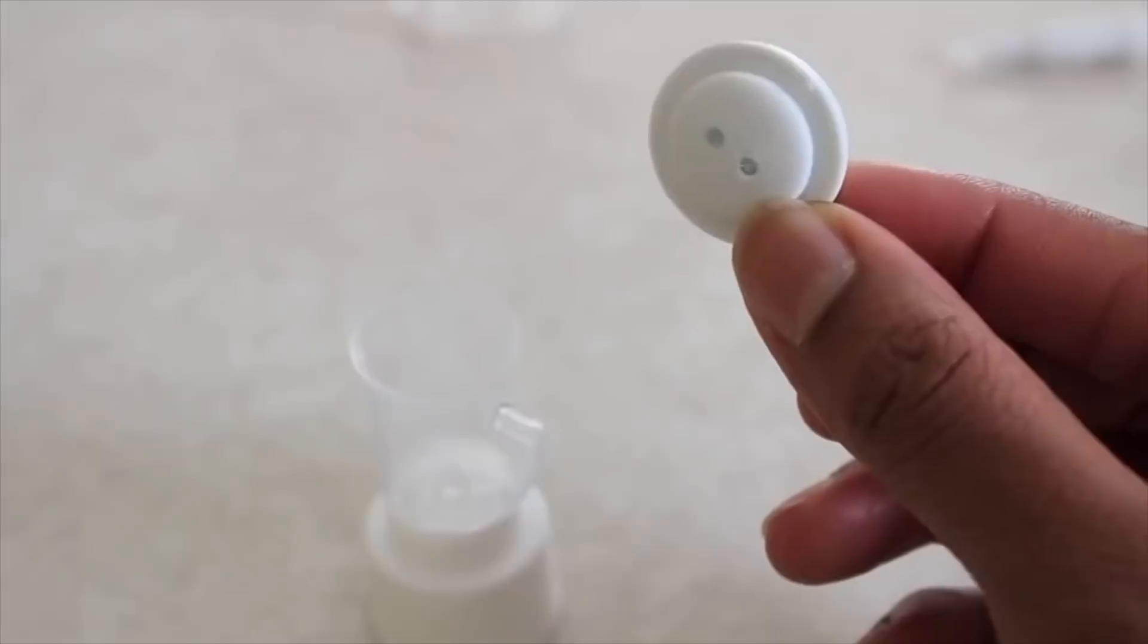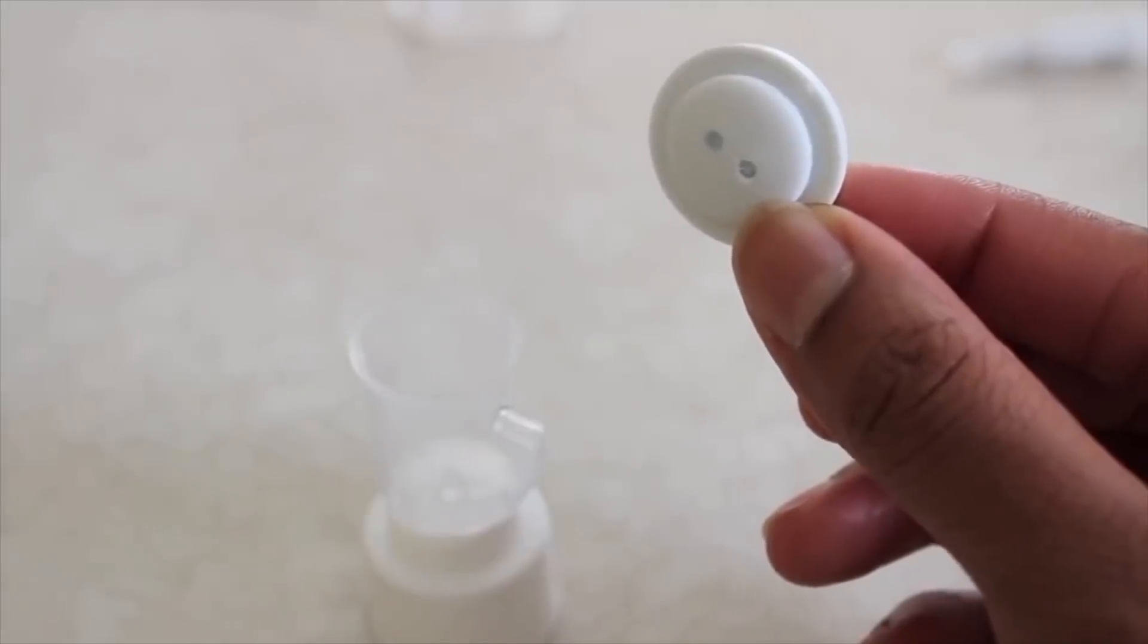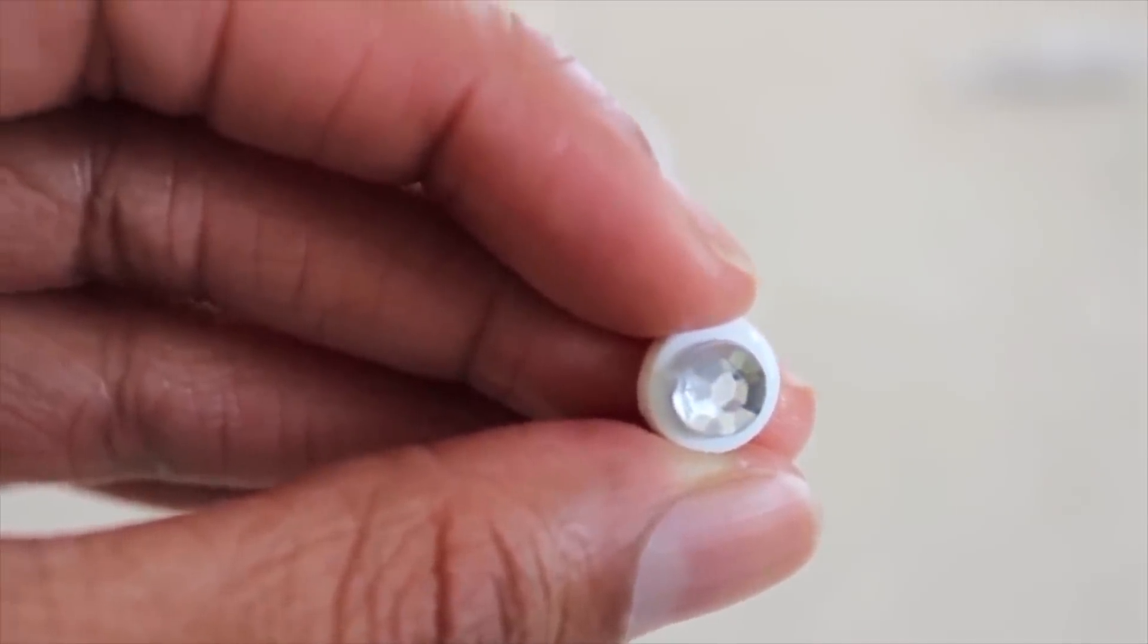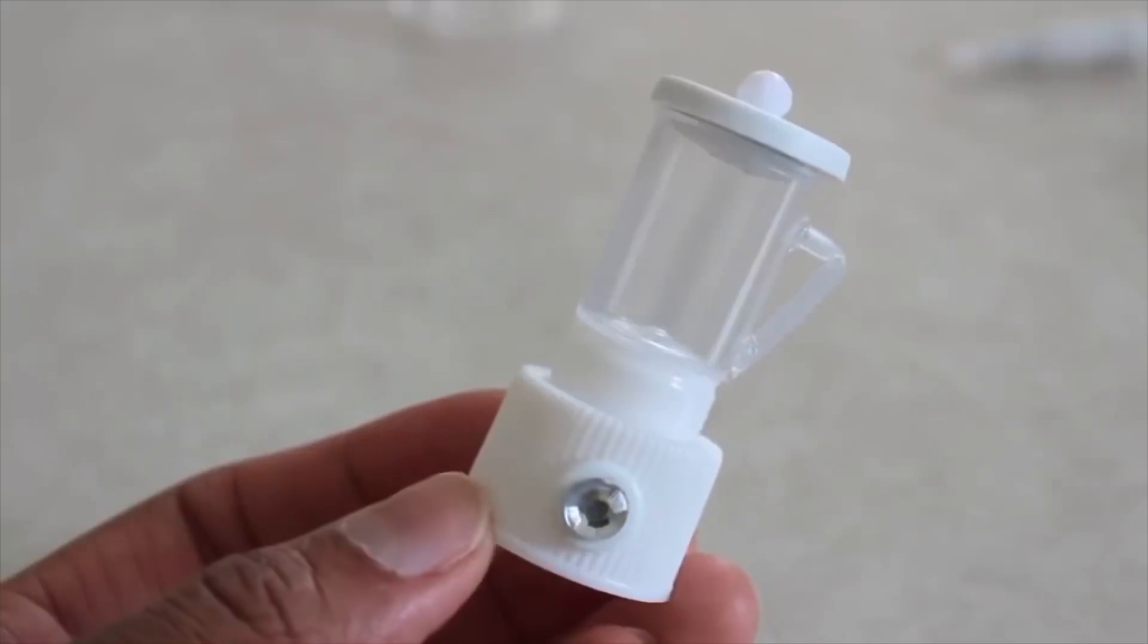I glue a bead to the top of a button. To keep my lid from falling off, I glued a smaller button underneath. I glue a jewel onto a smaller button and glue it to the base. And now I have a blender.